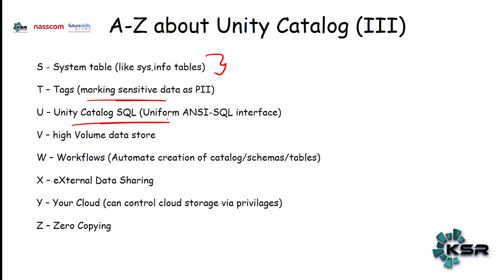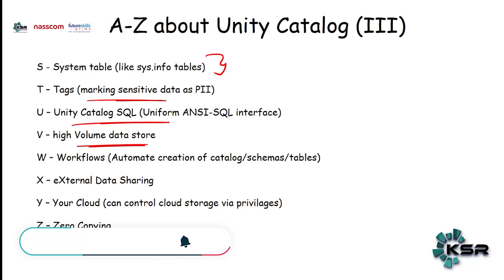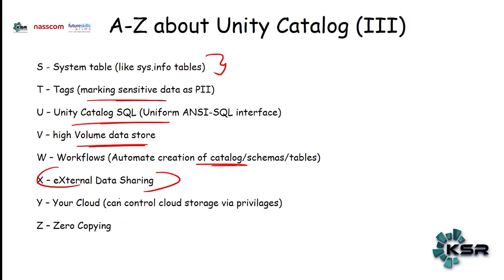Unity Catalog works very similarly to standard SQL syntax. High-volume data can be stored in Unity Catalog tables because in the backend it is still the cloud. Automation is also possible, as is external data sharing. If data is present in any cloud storage, you can still take control over it and create multiple copies.